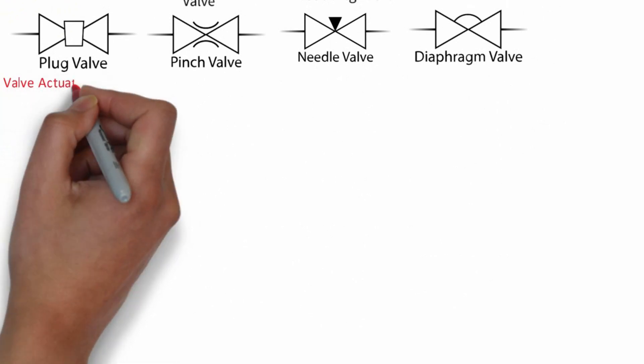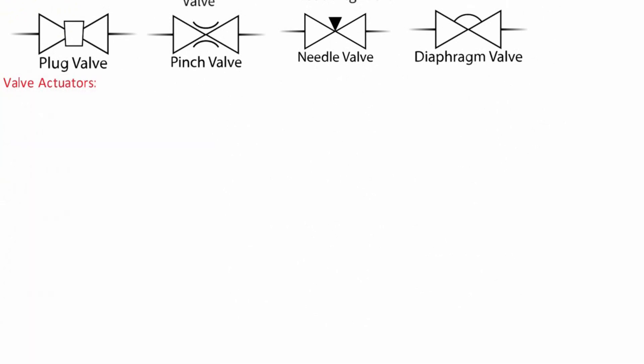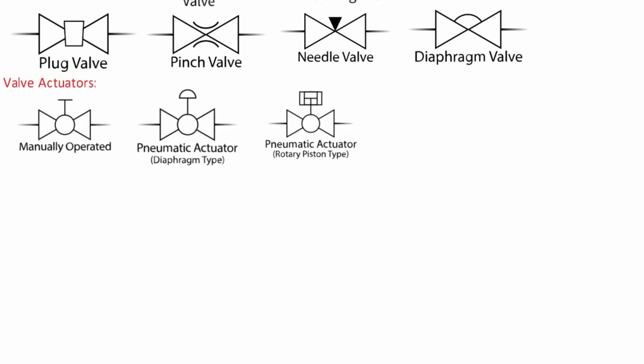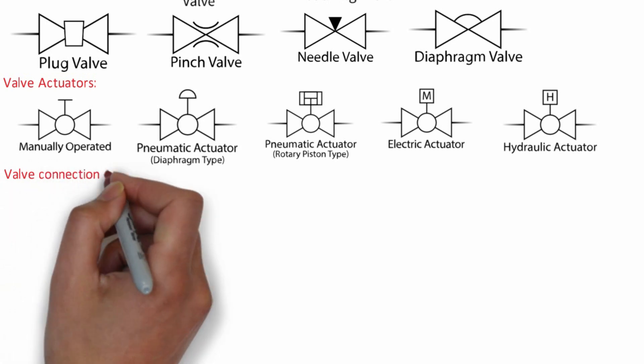Now valve actuators are usually shown like this. We have different valve actuators like manually operated, pneumatic actuators, pneumatic actuators rotary piston type, electrical actuators and hydraulic actuators. Now valve connection types.